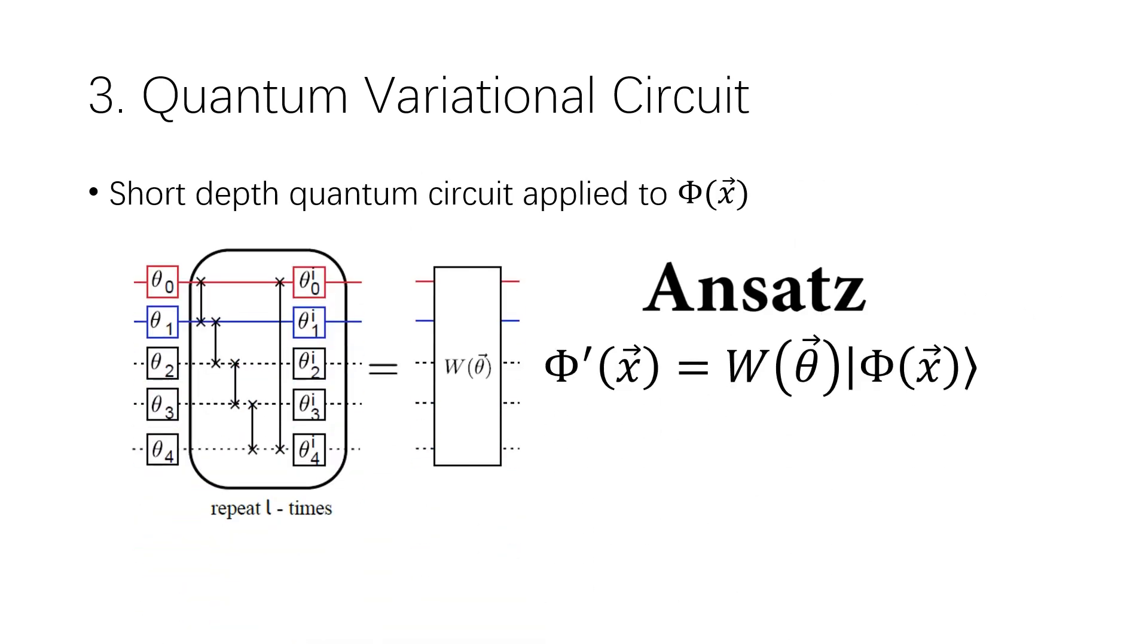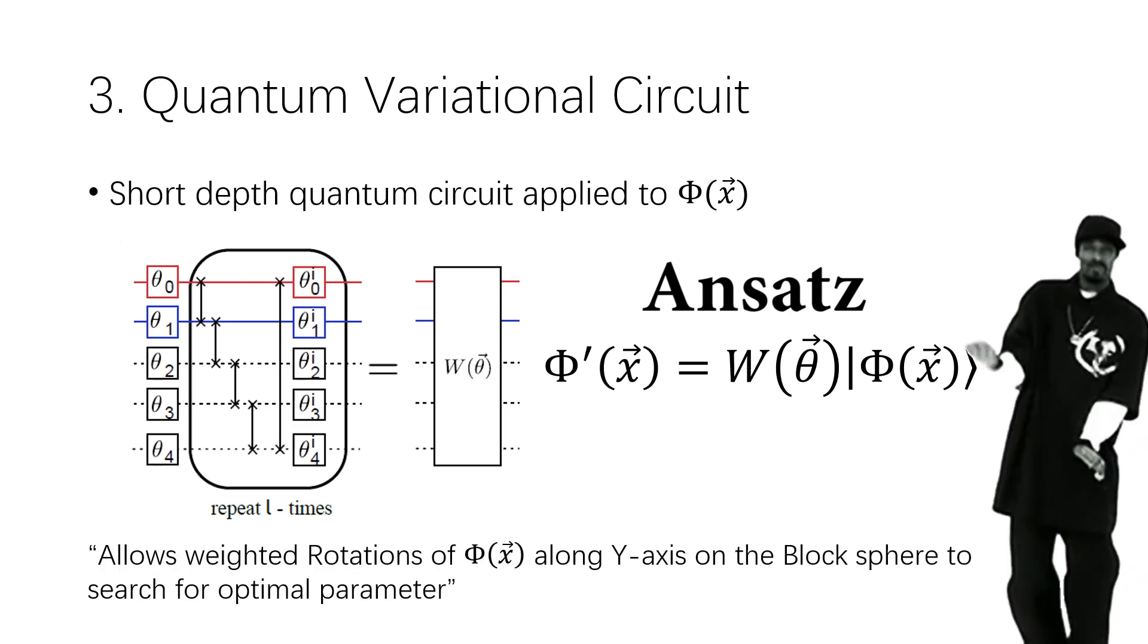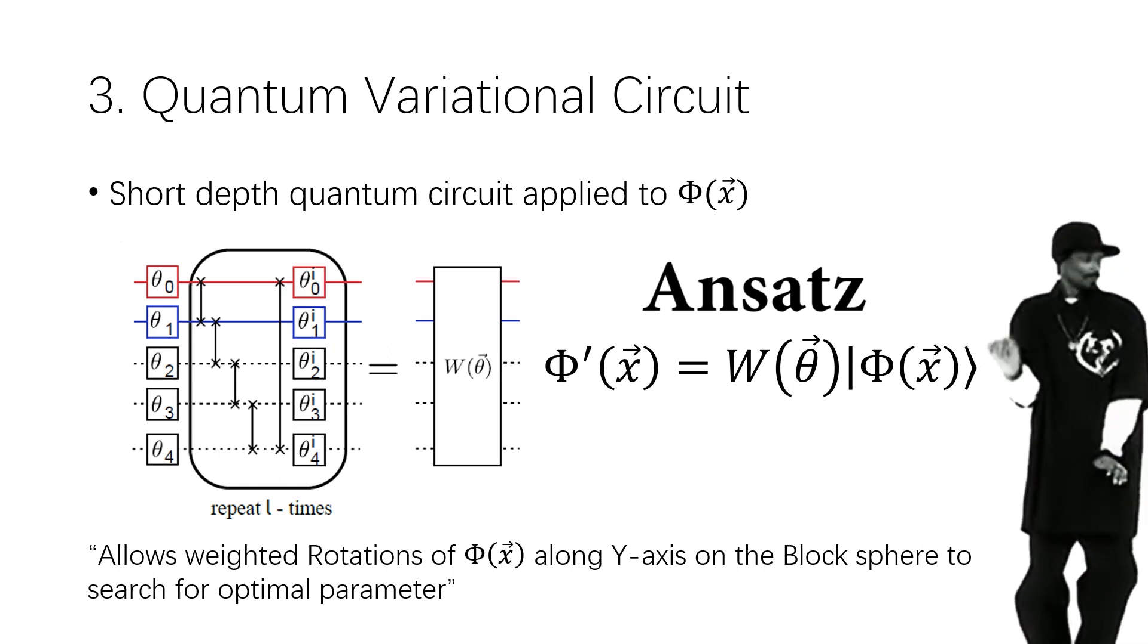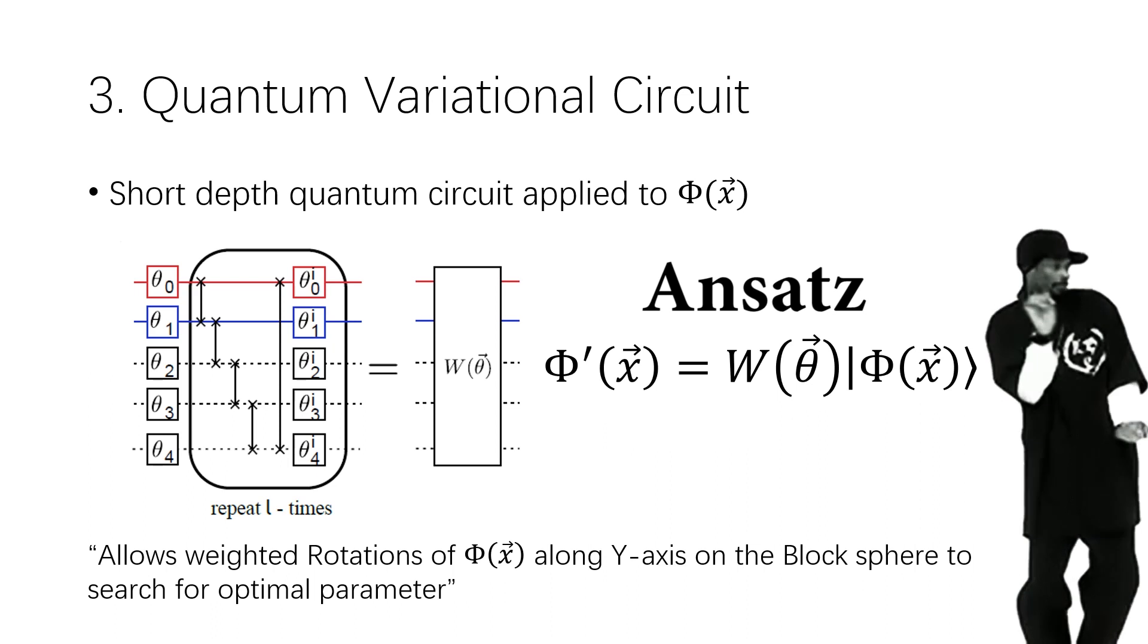Basically, it allows us to perform weighted rotation L times on the Bloch sphere. Since feature vectors are already encoded at some longitude and latitude angles, these ansatz provide higher dimensions and enable us to search optimal weights theta.